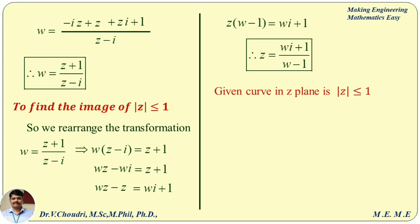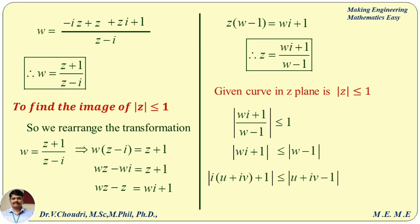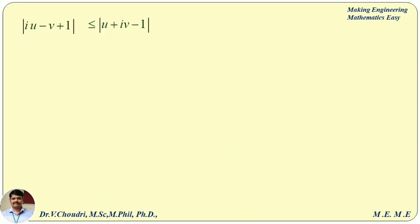Now we apply the modulus condition |z| less than or equal to 1. As per the property, we bring modulus of (w minus 1) to the right-hand side. We substitute w equal to u plus iv on both left-hand side and right-hand side. Multiplying i inside the bracket, we get modulus of (iu minus v plus 1) less than or equal to modulus of (u plus iv minus 1). Keeping real and imaginary parts separately, modulus of (1 minus v plus iu) less than or equal to modulus of (u minus 1 plus iv).